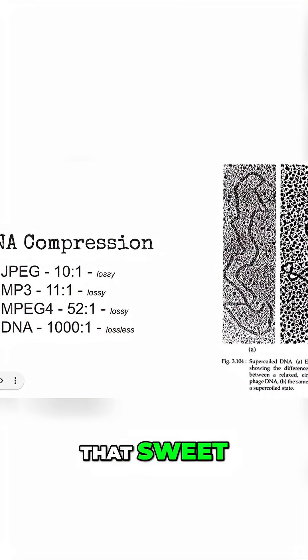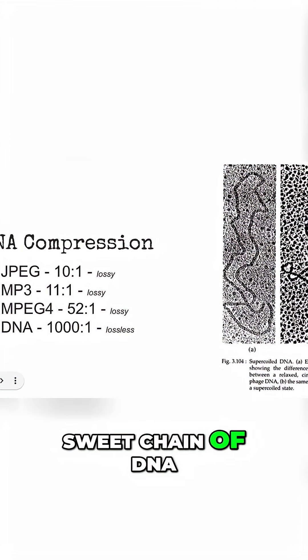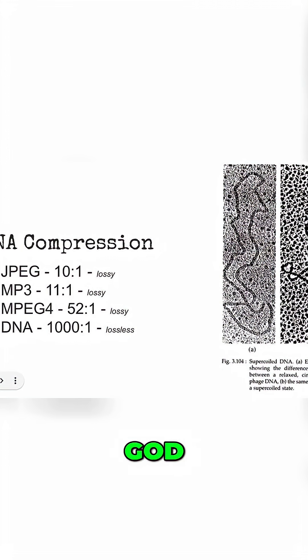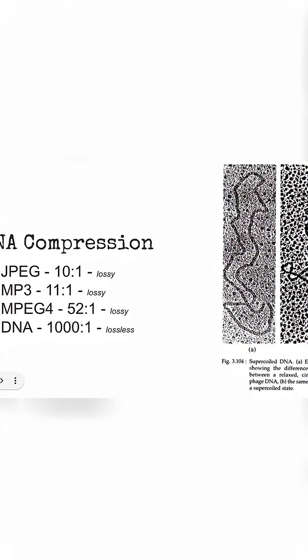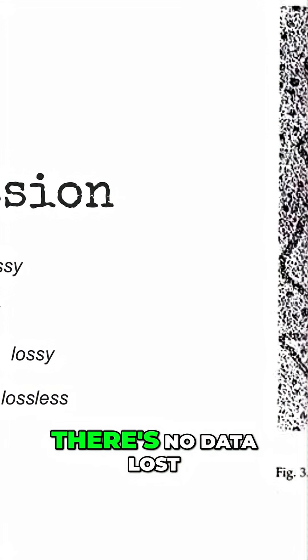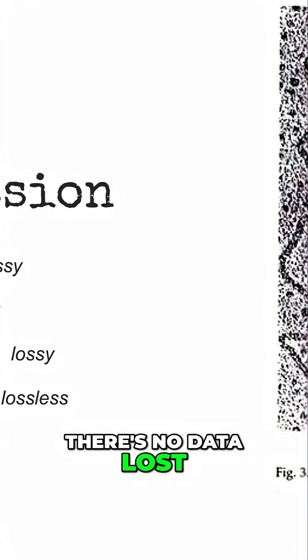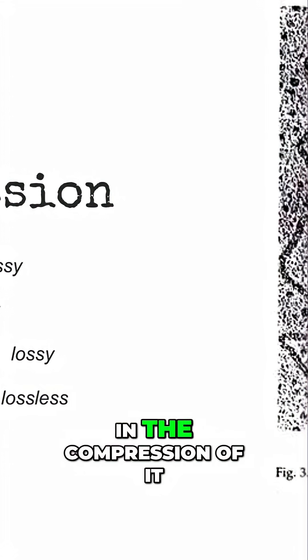But DNA — that sweet, sweet chain of DNA — 1000 to 1 lossless compression. Lossless. There's no data lost in the compression of it.